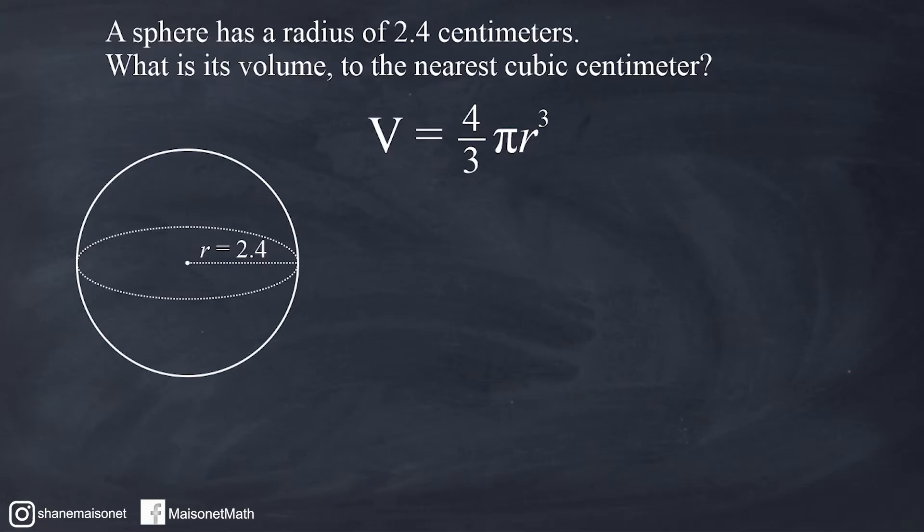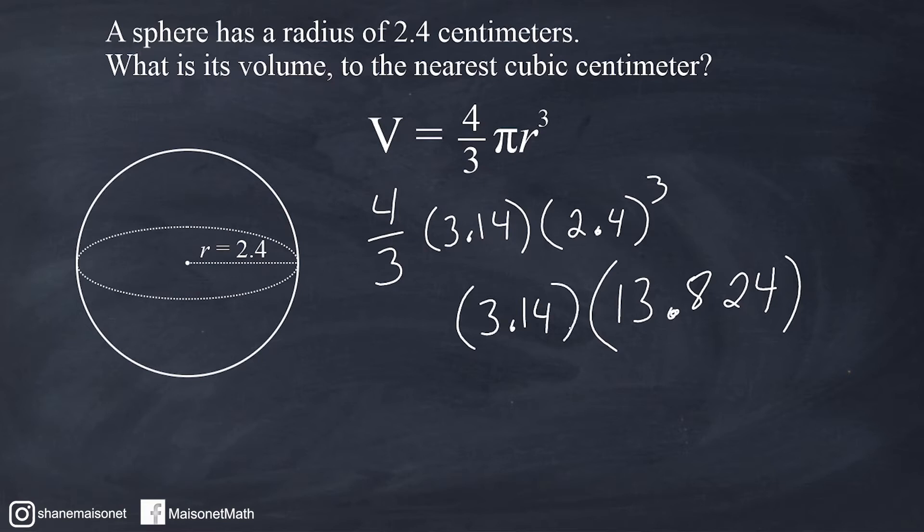The formula to find the volume of any sphere is 4/3 multiplied by pi, and we are going to substitute 3.14 in this case, and take the radius length of our sphere, which is 2.4, and raise it to the third power. The first thing we have to do is take care of this radius to the third power. If we multiply 2.4 by itself three times, we end up getting 13.824. Then we have to take that result and multiply by 3.14, and take that result and multiply by 4/3.